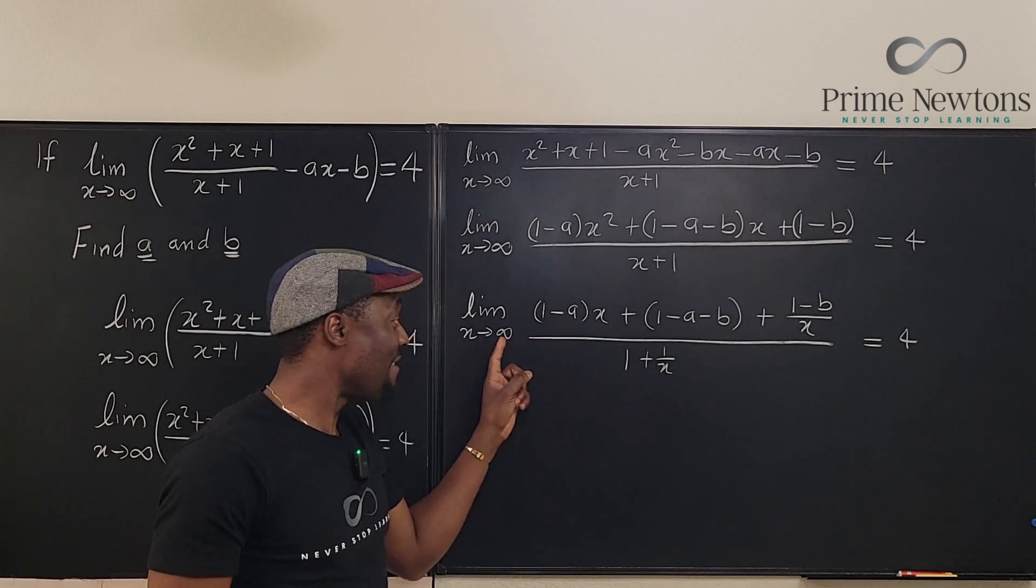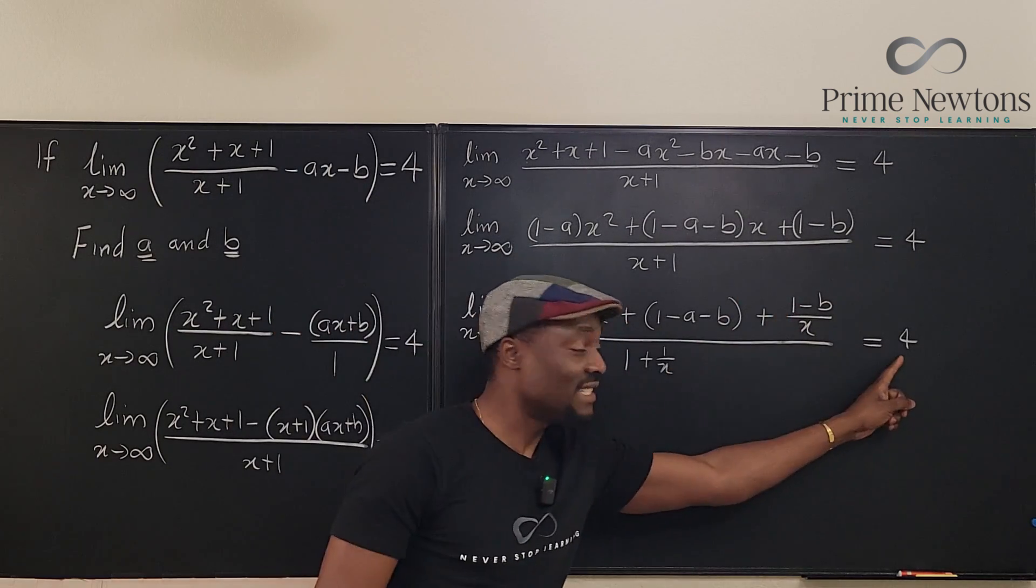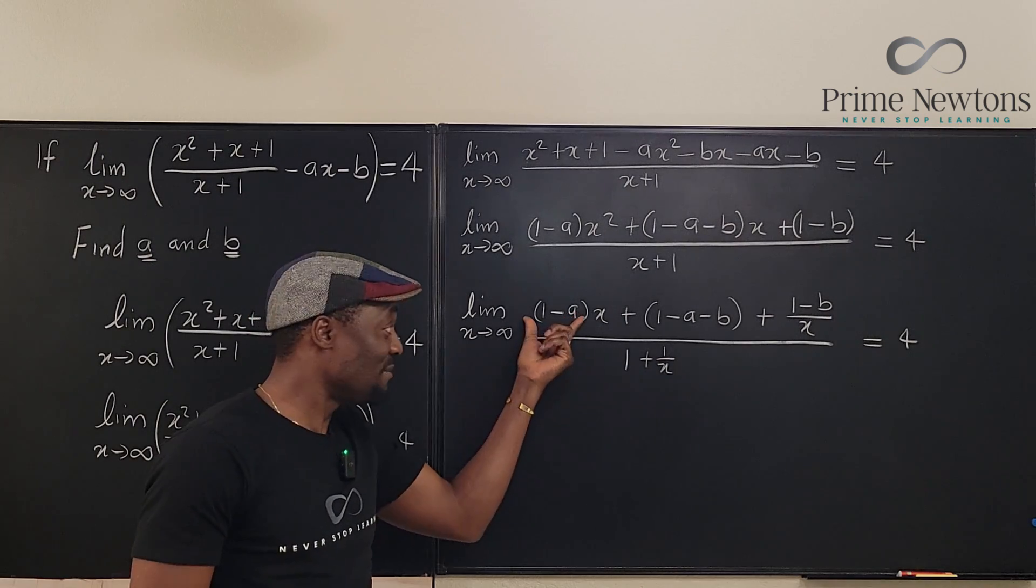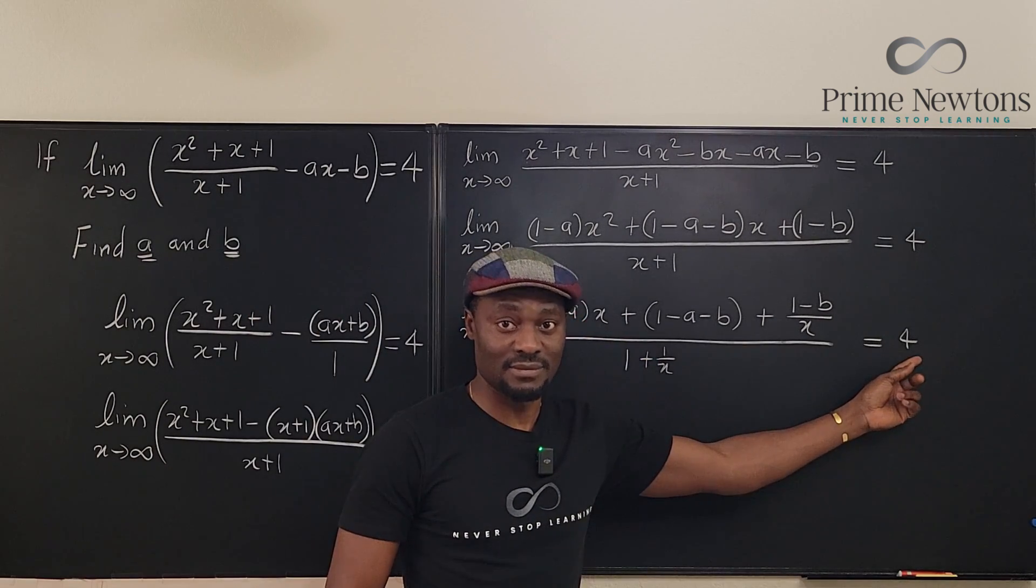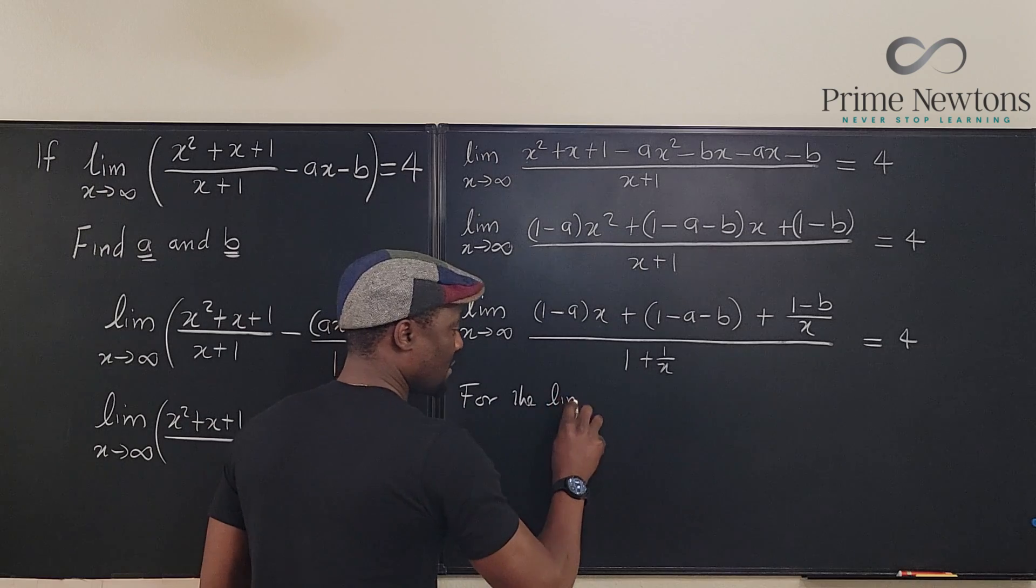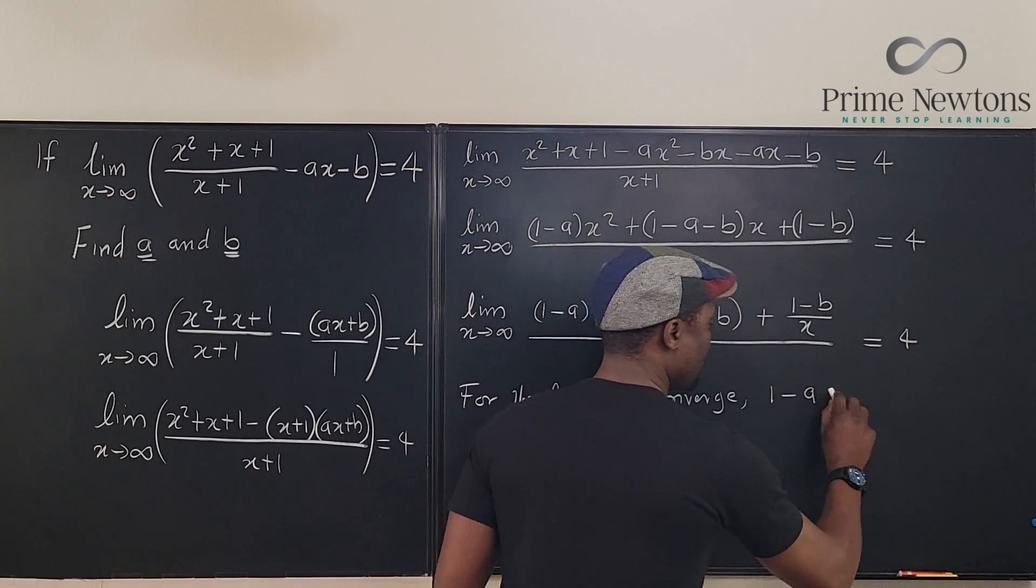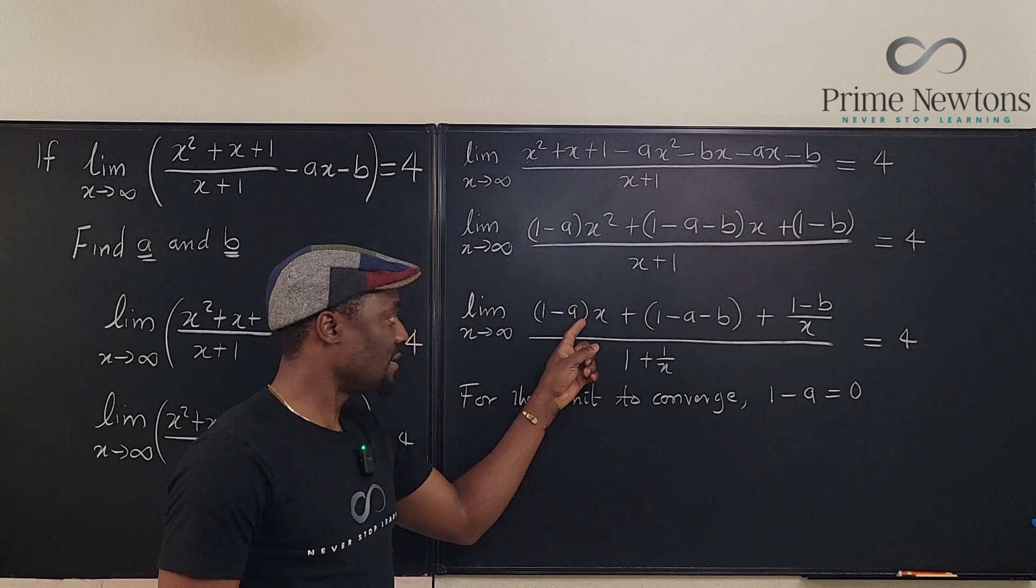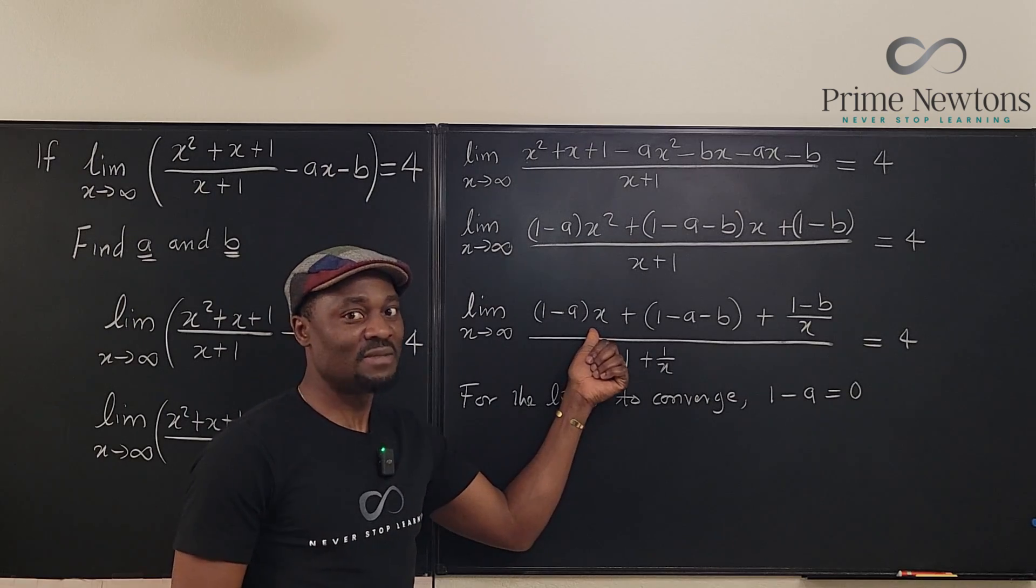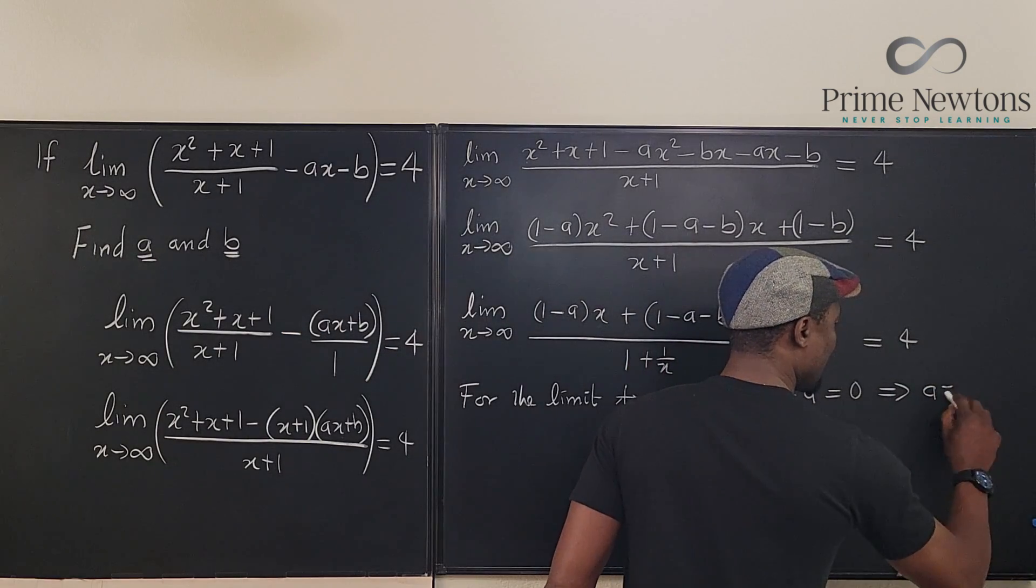We cannot have x here because this is going to go to infinity. So the only way we have a finite limit is if this coefficient is 0. So this must be 0 for us to have a finite limit. For the limit to converge, 1 minus a must equal 0. Otherwise this limit will not converge. We don't want infinity because what we want is 4. And this implies that a is equal to 1.